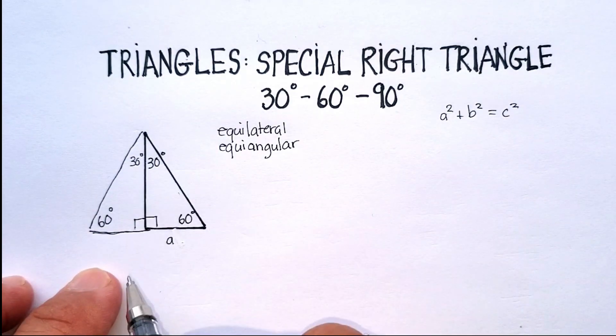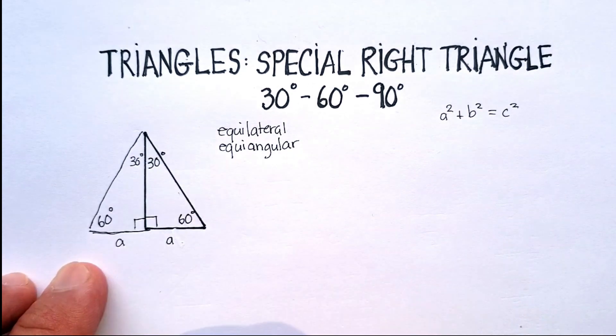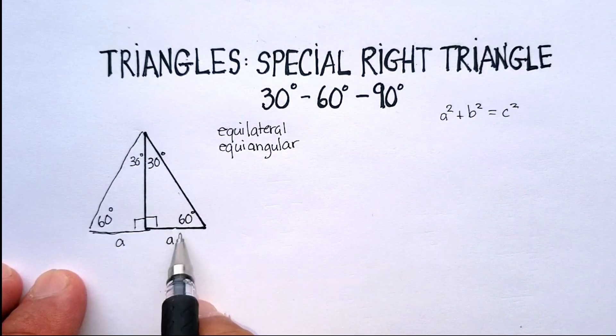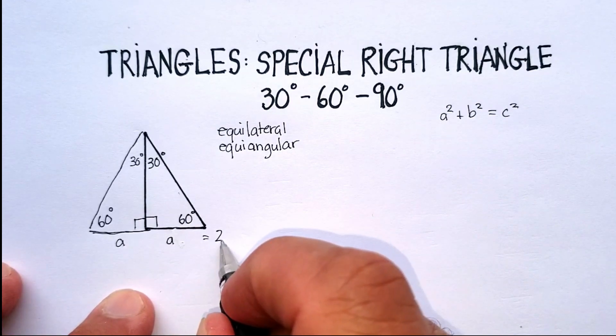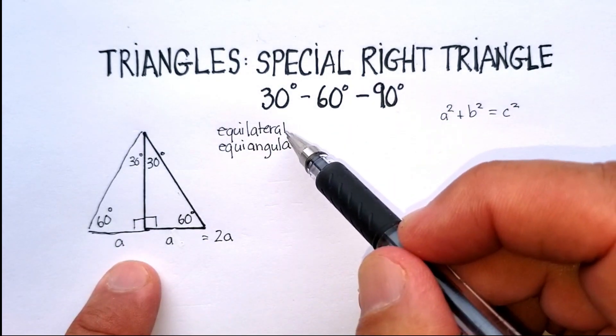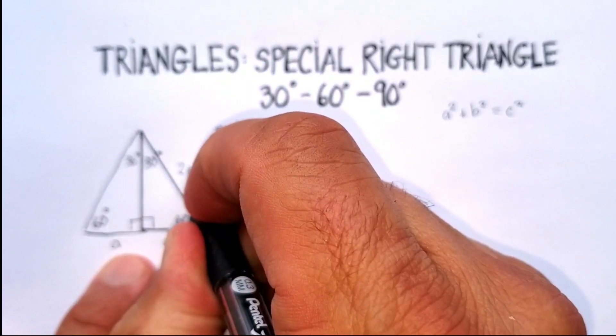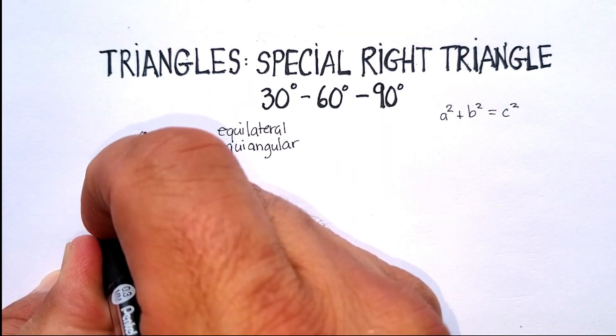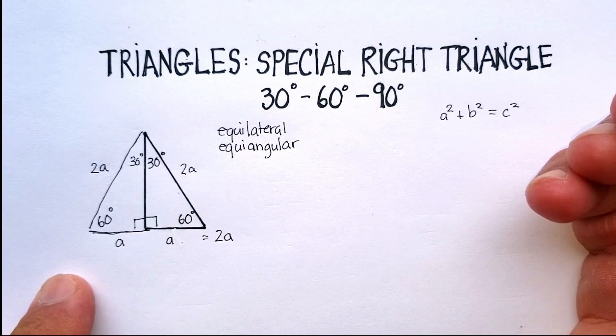Now, look what happens here. Since I know that this is A, I know that it flipped over. However, this is also A. In other words, this whole side now is equal to 2A. And since we have an equiangular, equilateral triangle, we know that this side is also 2A, and this side is also 2A.